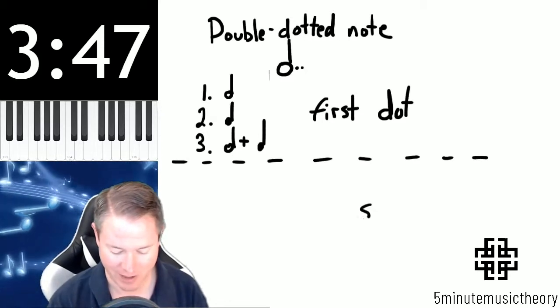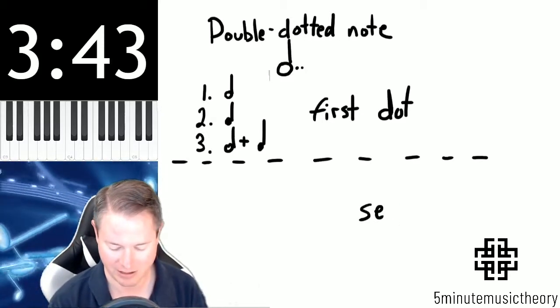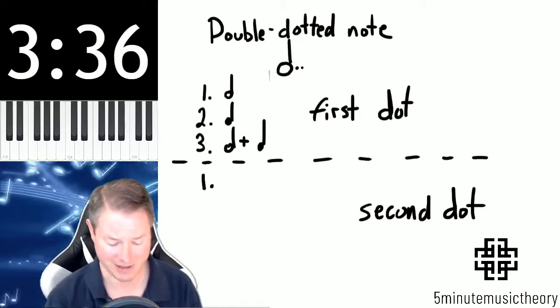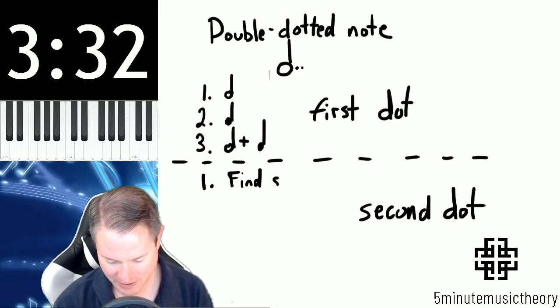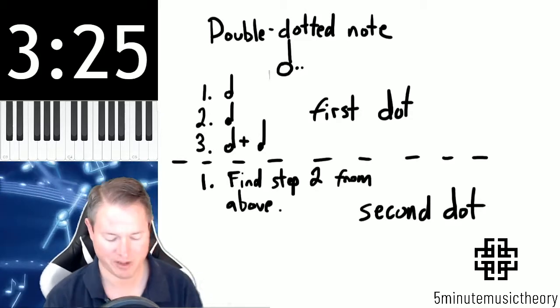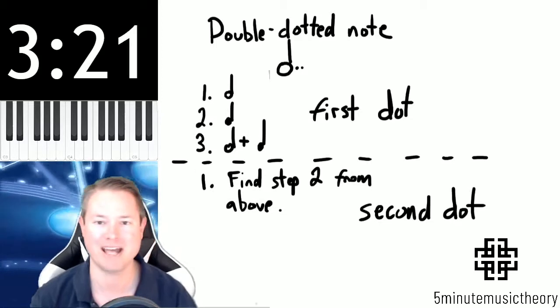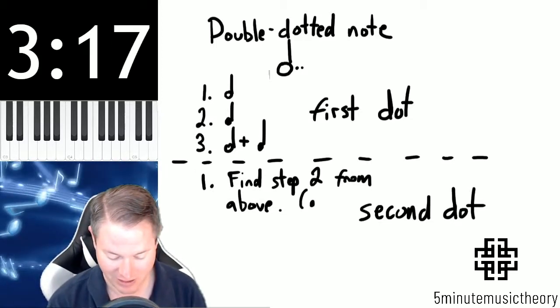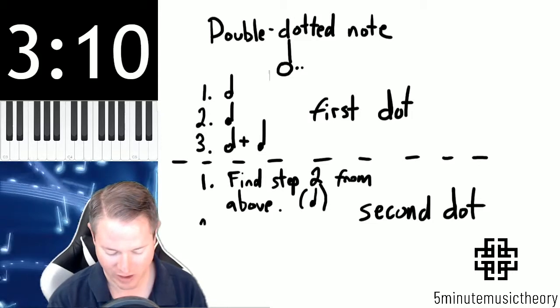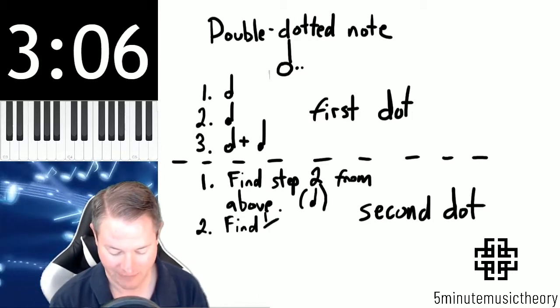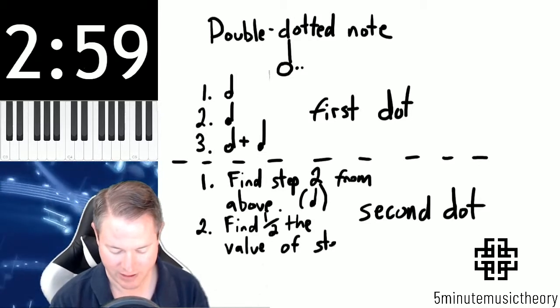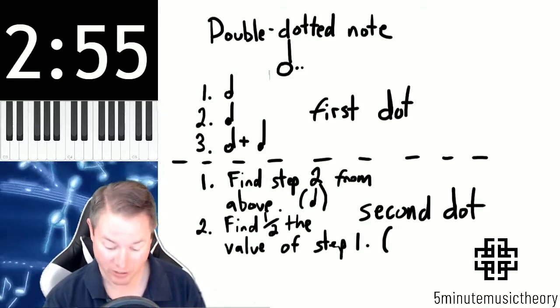There's another set of steps for the second dot, which we'll put down here. The first step for this second dot is find step two from above. Step two was the quarter note from above, and that's the value that we added to the original undotted note. So we're taking whatever we added to that undotted note from before, and then we are finding half of that value. Half of a quarter note is an eighth note.